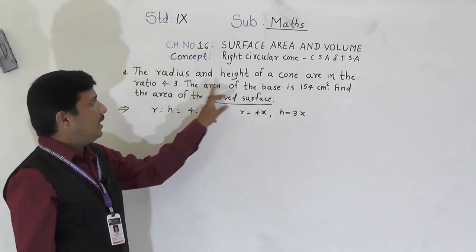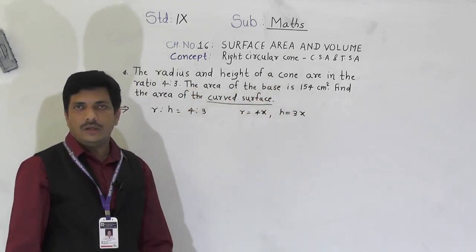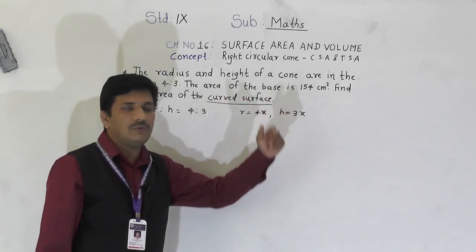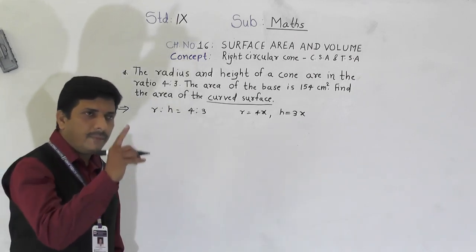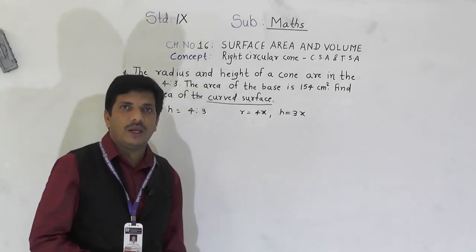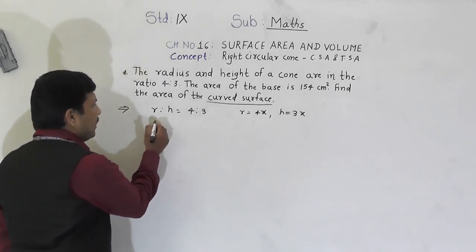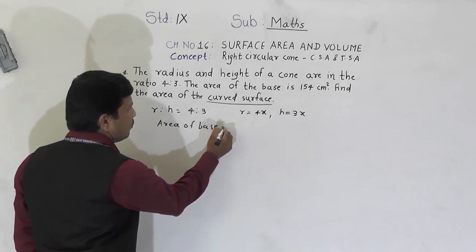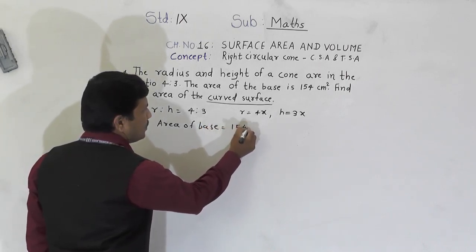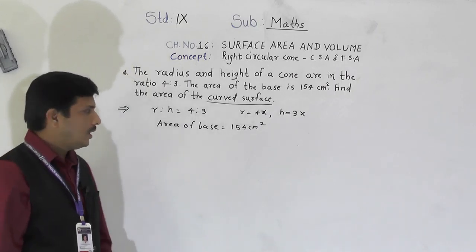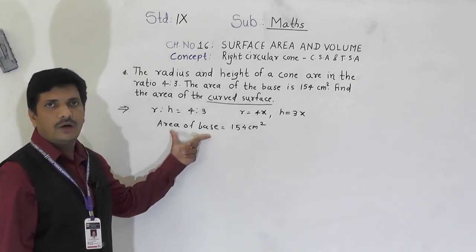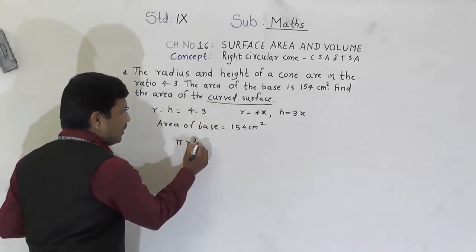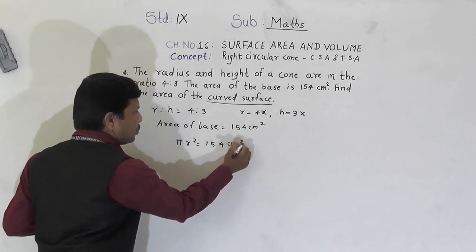The area of the base is given as 154 cm². The base is circular, so we use the formula for area of a circle. Area of base = πr² = 154 cm².